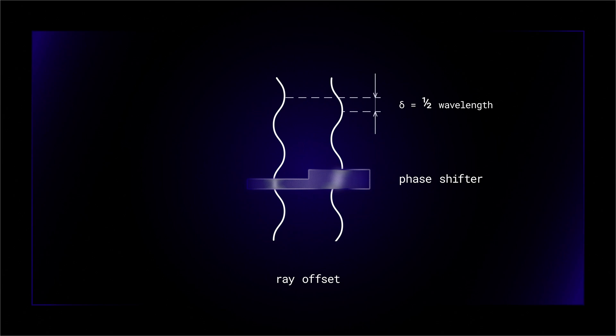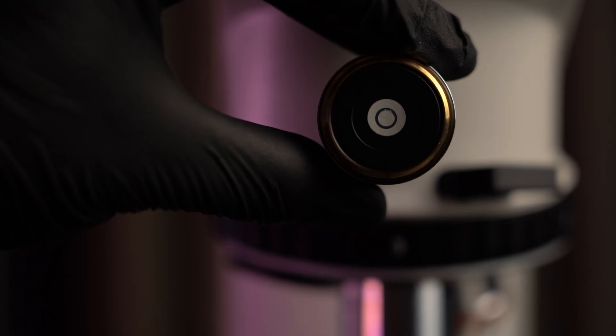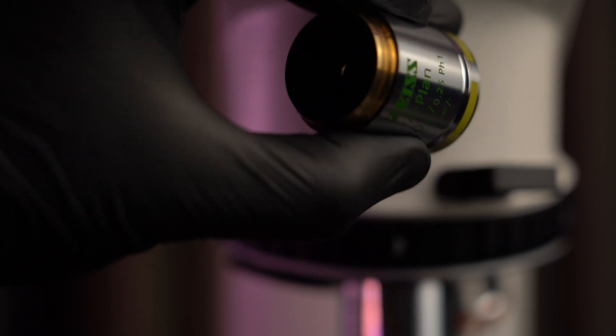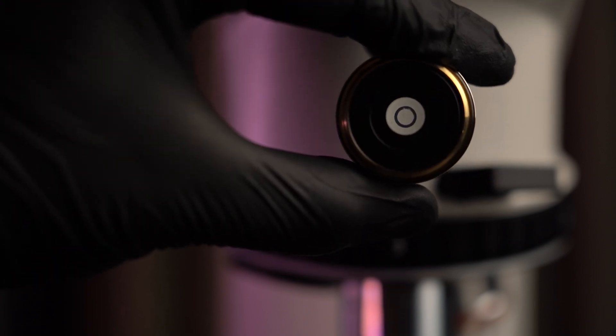Because the undeviated light of the zeroth order is much brighter than the faint diffracted light, a thin ND filter is deposited on the ring to bring the direct and diffracted light into better balance of intensity in order to increase contrast.